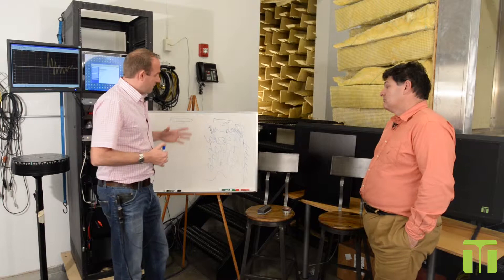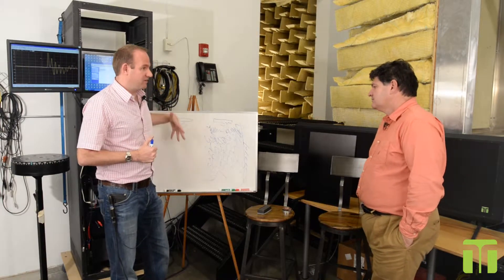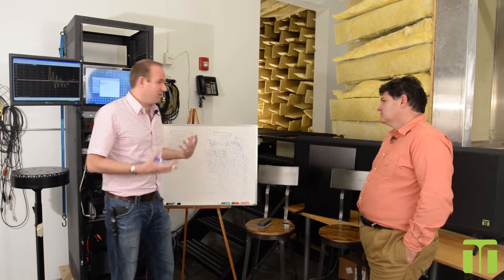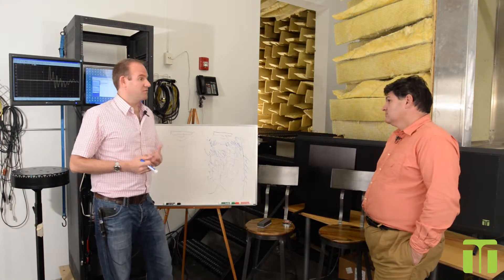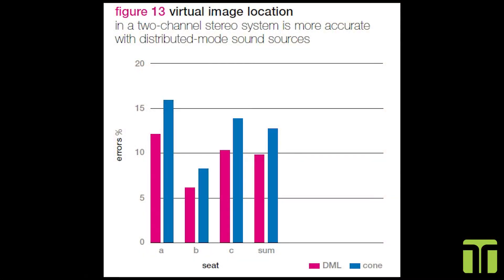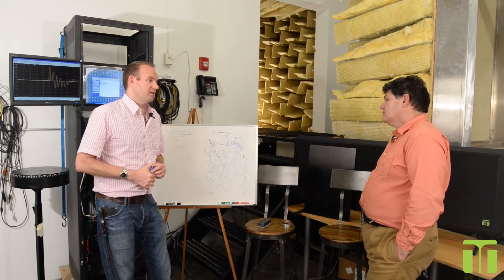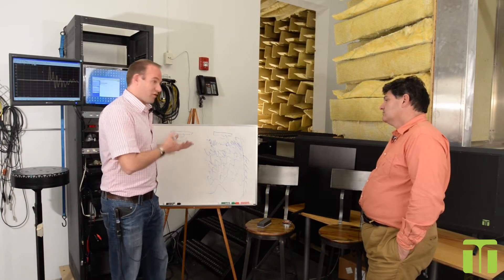That's what's happening with the DML — you can get a nice stereo image. Because it's not interacting with the room and creating hot spots, cold spots, and interference effects, the image can be thought of as more stable. Even with a conventional speaker, if any of those reflections arrive within the precedence window and are coherently related, that can cause all kinds of auditory confusion in a reverberant space.